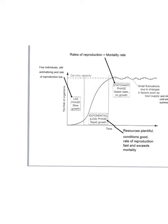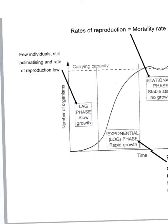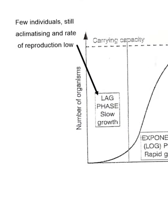This is what you'll need to copy down or annotate. Phase one: the lag phase, or the period of slow growth. Few individuals are still acclimatising to the new environment, therefore the rate of reproduction is generally low. Small numbers of individuals that are initially present reproduce, therefore increasing the total population. As the birth rate is higher than the death rate, the population increases in size.